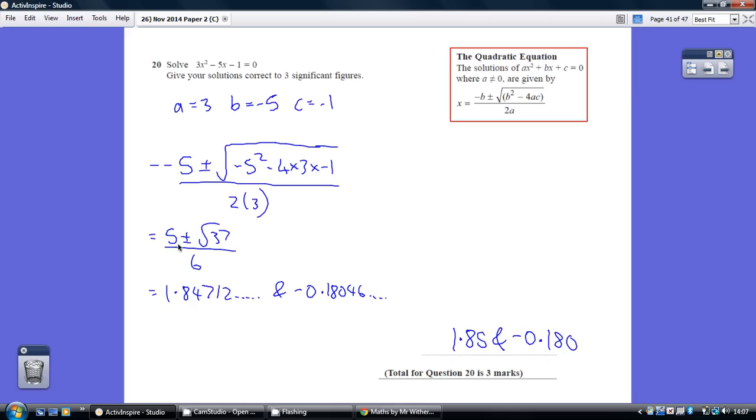Then underneath the square root we've got b squared. So minus 5 squared. Minus 5 times minus 5 is plus 25. So plus 25 here. And then minus 4 times a times c. So minus 4 times 3 times minus 1. Minus 4 times 3 times minus 1 which is plus 12. So 25 plus 12 is plus 37.